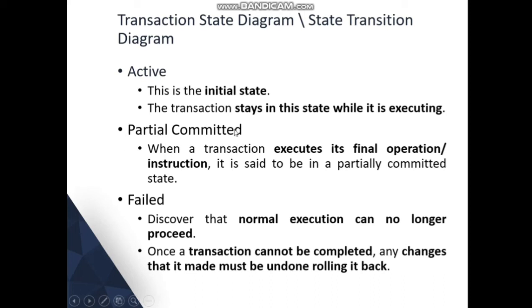Partial Committed: When a transaction executes its final operation or last instruction, it is said to be in the partially committed state. This means half of the execution has been done successfully and the last operation or statement is about to execute — just before that final operation completes, the transaction is in the partial committed state.